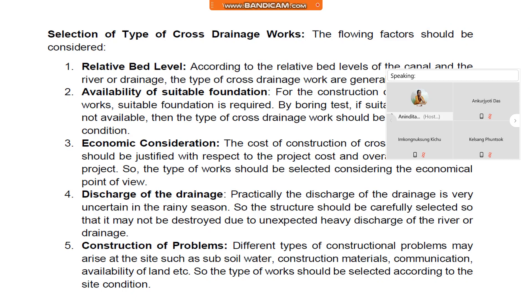Number three, economic consideration. The cost of construction of cross drainage work should be justified with respect to the project cost and overall benefits of the project. The type of work should be selected considering the economical point of view.